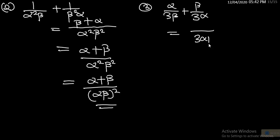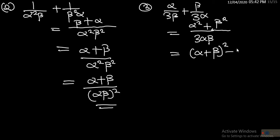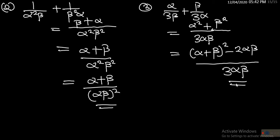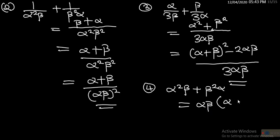For the next example, we have alpha² + 3·alpha·beta + beta² over 3·alpha·beta. Since alpha² + beta² = (alpha + beta)² − 2·alpha·beta, substituting gives [(alpha + beta)² − 2·alpha·beta] / (3·alpha·beta). Another example, number four: alpha²·beta + beta²·alpha. Factorising, alpha·beta is common, leaving alpha + beta, so the answer is alpha·beta·(alpha + beta).